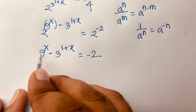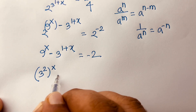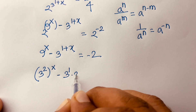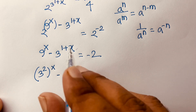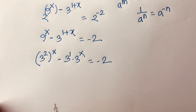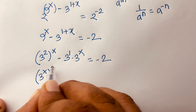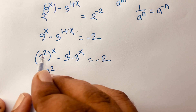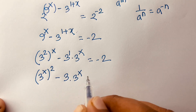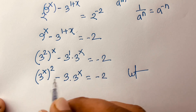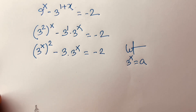We know that 9 equals 3 squared, so 9^x becomes (3²)^x, which is (3^x)². And 3^(1+x) equals 3^1 times 3^x. So the equation becomes (3^x)² minus 3 times 3^x is equal to minus 2.